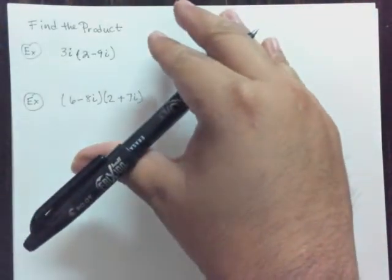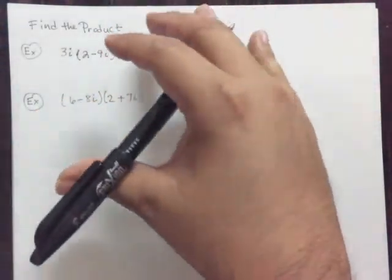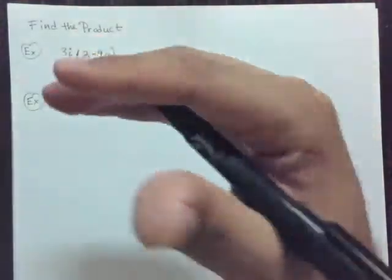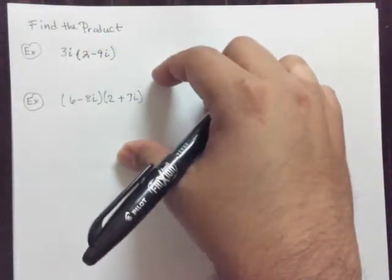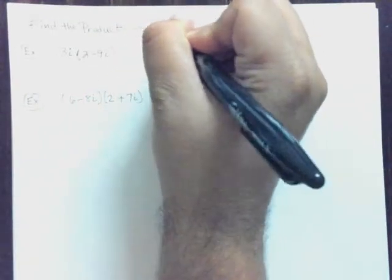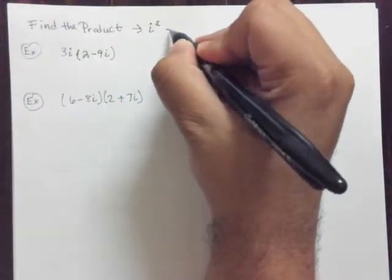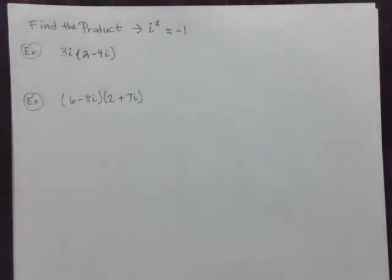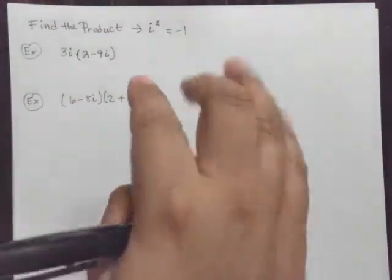So again, I'm going to stress the importance. Don't get scared by this i business. Just treat it as if it were an x. The only thing we have to remember is this special property here that if we get i squared, we have to remember that i squared is negative 1. Okay, so just keep that in mind, and we'll be set.